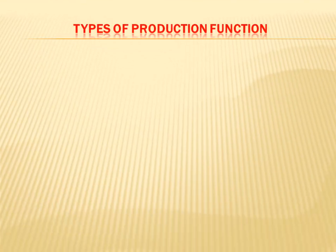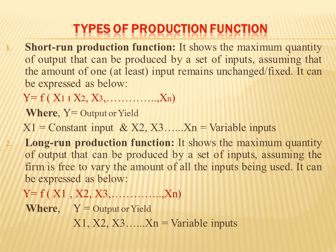Let us discuss the types of production function. We will discuss four types of production function generally used in production economics. First is the short-term production function. As its name suggests, the short-term production function shows the maximum quantity of output that can be produced by a set of inputs, assuming that the amount of at least one input remains unchanged or constant.